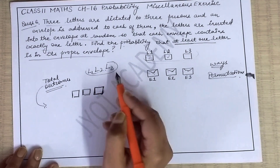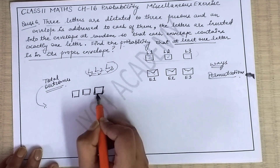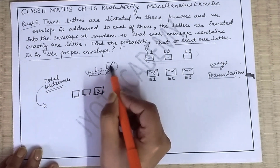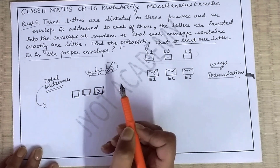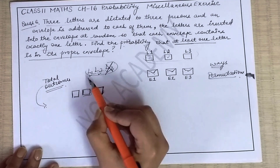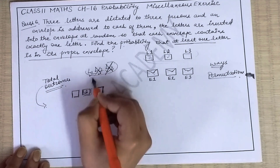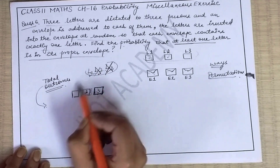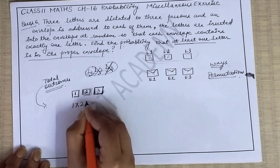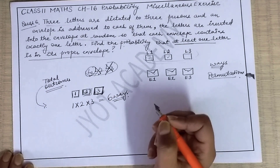We have three letters to put into three envelopes. For the first envelope, three choices are available: letter 1, letter 2, or letter 3. Once one is placed, two choices remain for the second envelope, and only one letter is left for the third. So by permutation: 1 × 2 × 3 = 6 total ways the letters can be placed in envelopes.